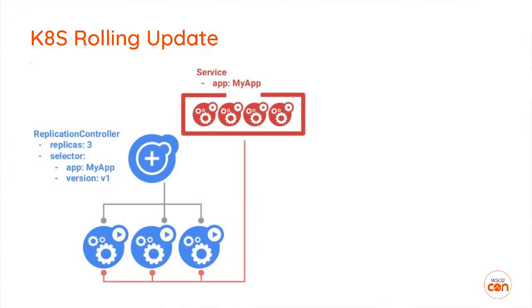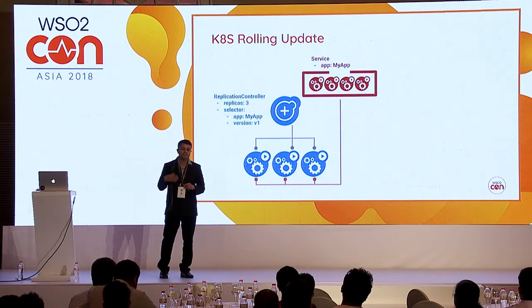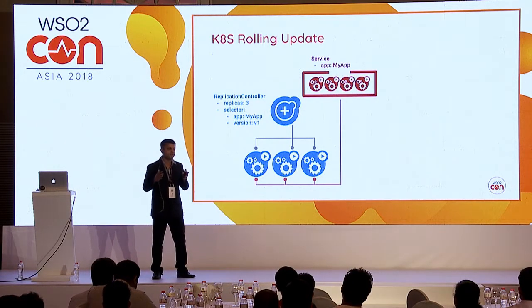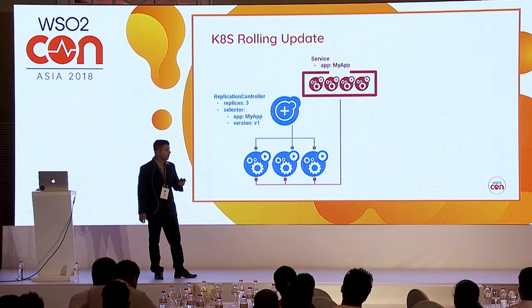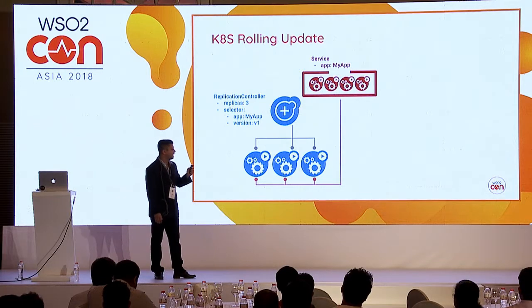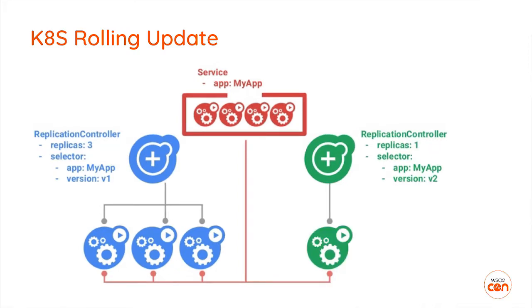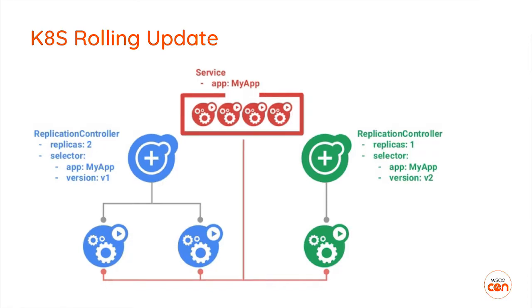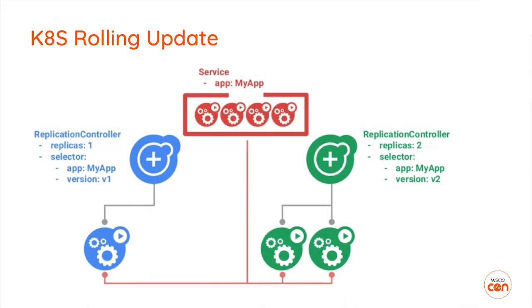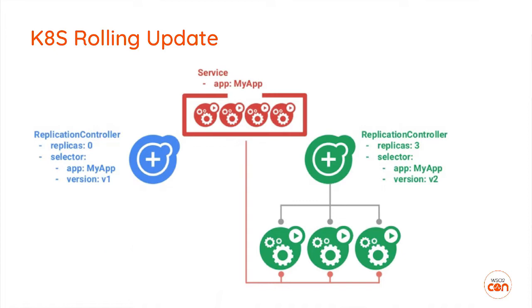Rolling updates are one of my favourite features. With rolling updates you can update your application to a newer version without service disruption — you don't handle it manually. When a rolling update runs, it creates a new replication controller, gradually increases the number of replicas in the new controller, and removes replicas from the old controller, until all pods have moved to the new version.